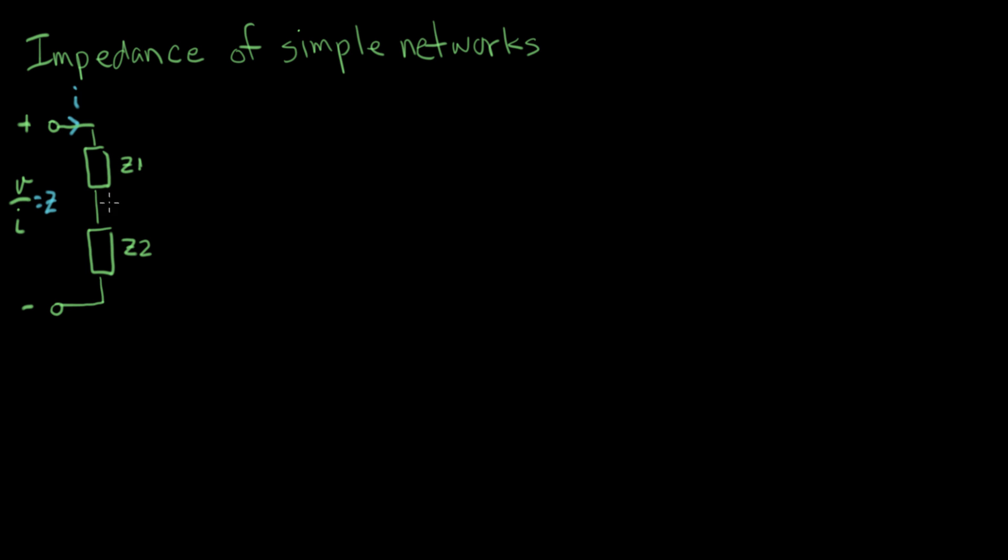Now we have a circuit here with two impedances in it in series. They're connected in series because they're head to tail. If both of these impedances were resistors, like this, if we just make them resistors.